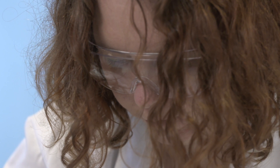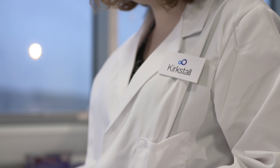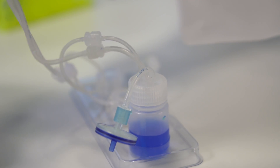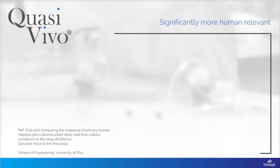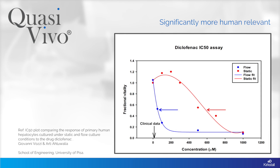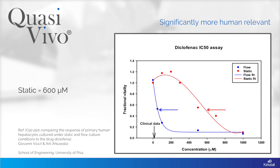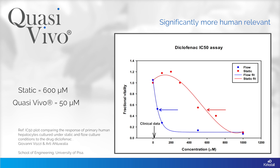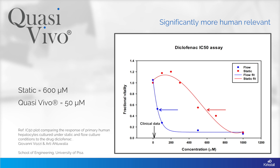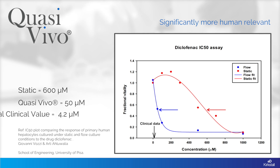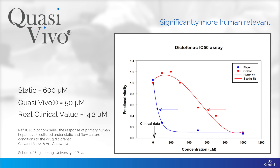Quasivivo's unique design and ability to control multiple variables has been proven to make the research environment significantly more comparable to human physiology. In this graph, rat hepatocytes were used to monitor the IC50 of diclofenac. It's clear that the static experiment has wrongly predicted the IC50 at just under 600 micromolar. Using the Quasivivo system, the IC50 is around 50 micromolar — a whole magnitude lower than was predicted in static culture and much closer to the real clinical value of 4.2 micromolar.